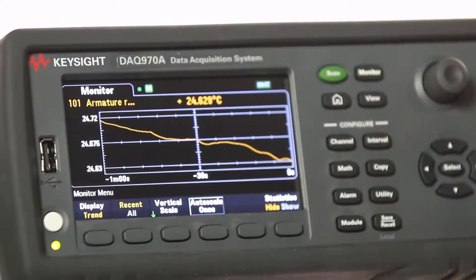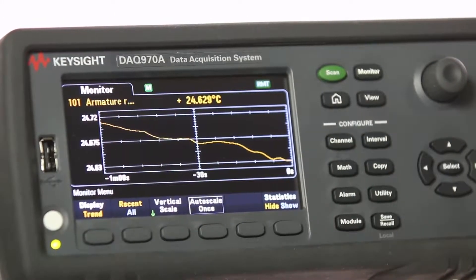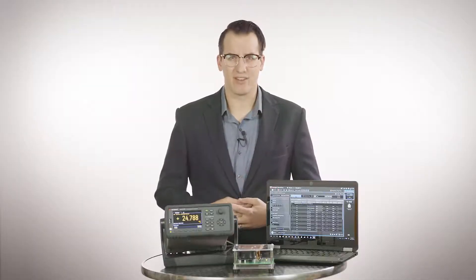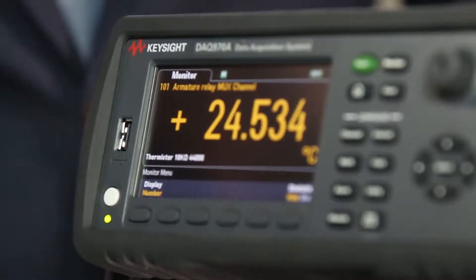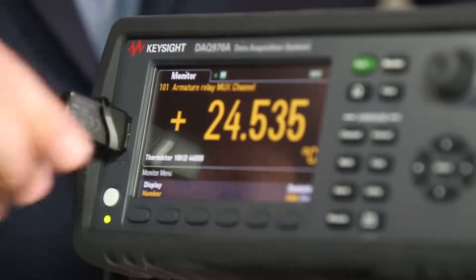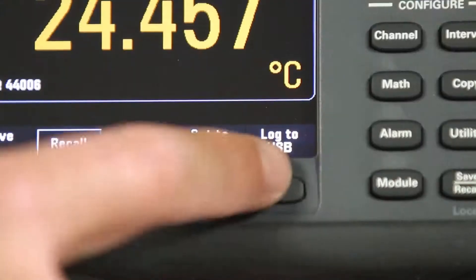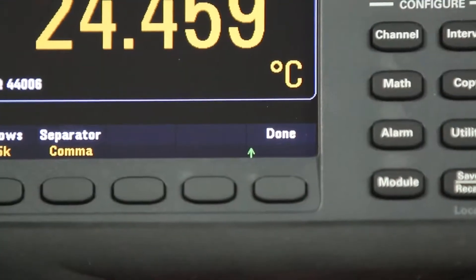In addition to the colorful graphical user interface, the DAC 970A comes with useful productivity features. It has multi-language support for the built-in help and users guide. The front panel has a USB port which allows you to use a USB thumb drive for data log. Simply select log to USB to enable the USB data lock.